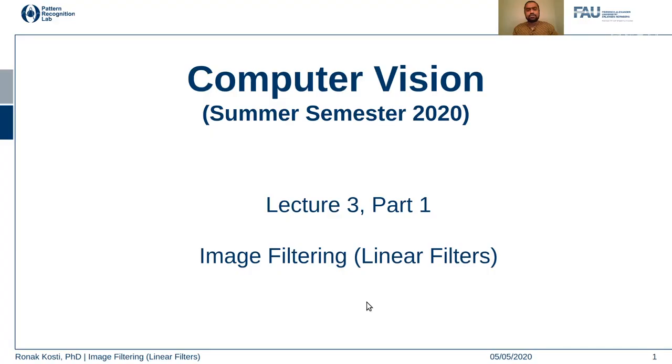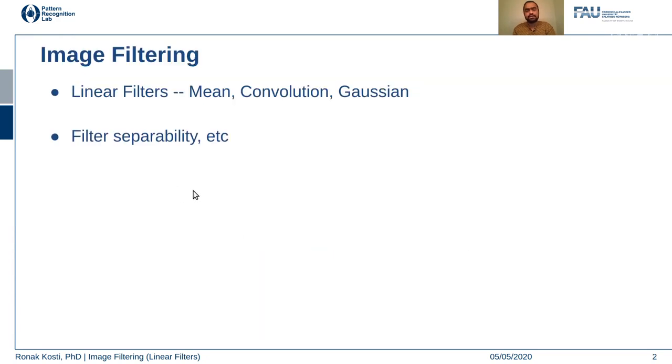Hello everyone and welcome back to the computer vision lecture series. This is lecture 3, part 1. In this lecture we are going to talk about image filters, specifically linear filters. We will also talk about different kinds of linear filters and see some examples, specifically mean filters, Gaussian filters, and which filters are considered convolutional filters.